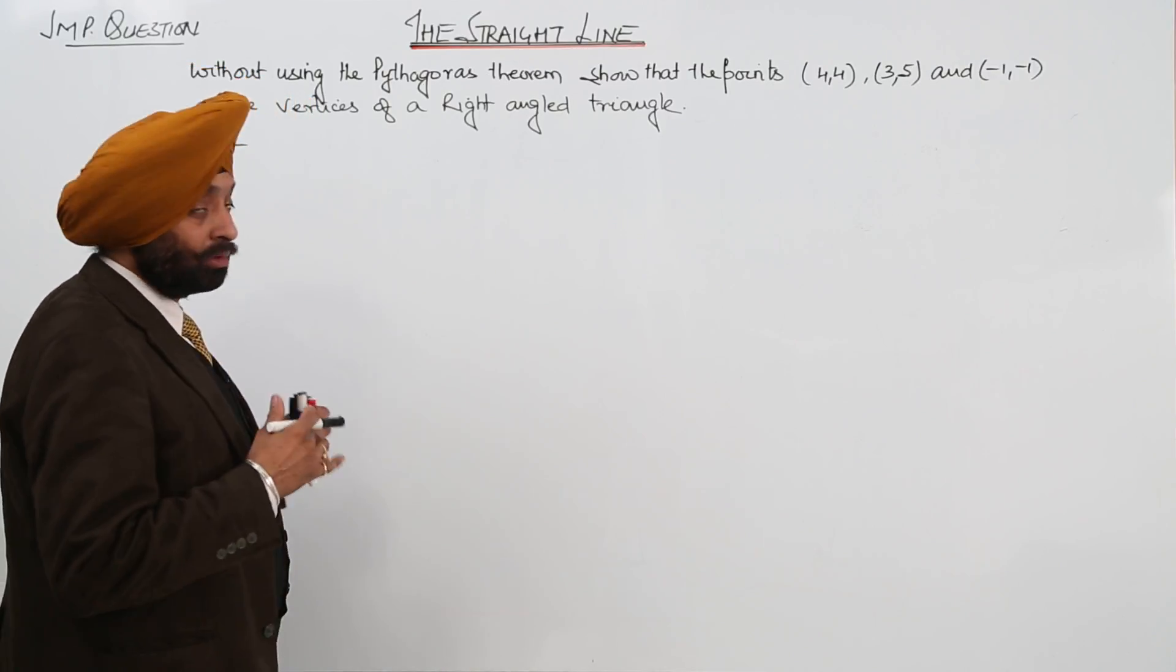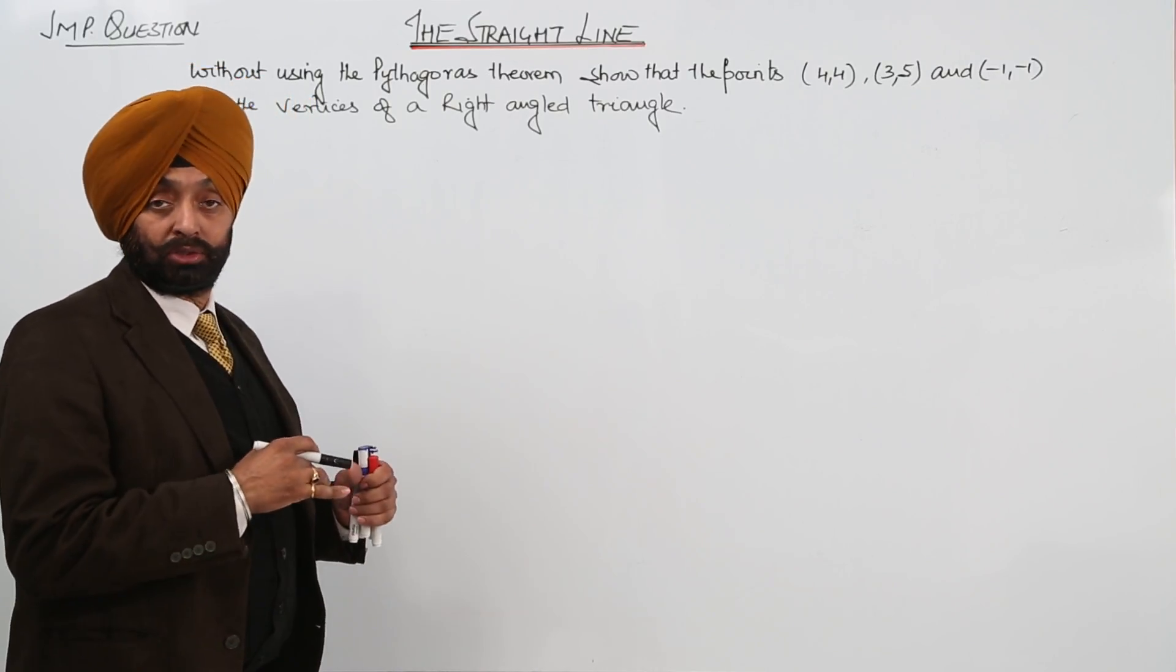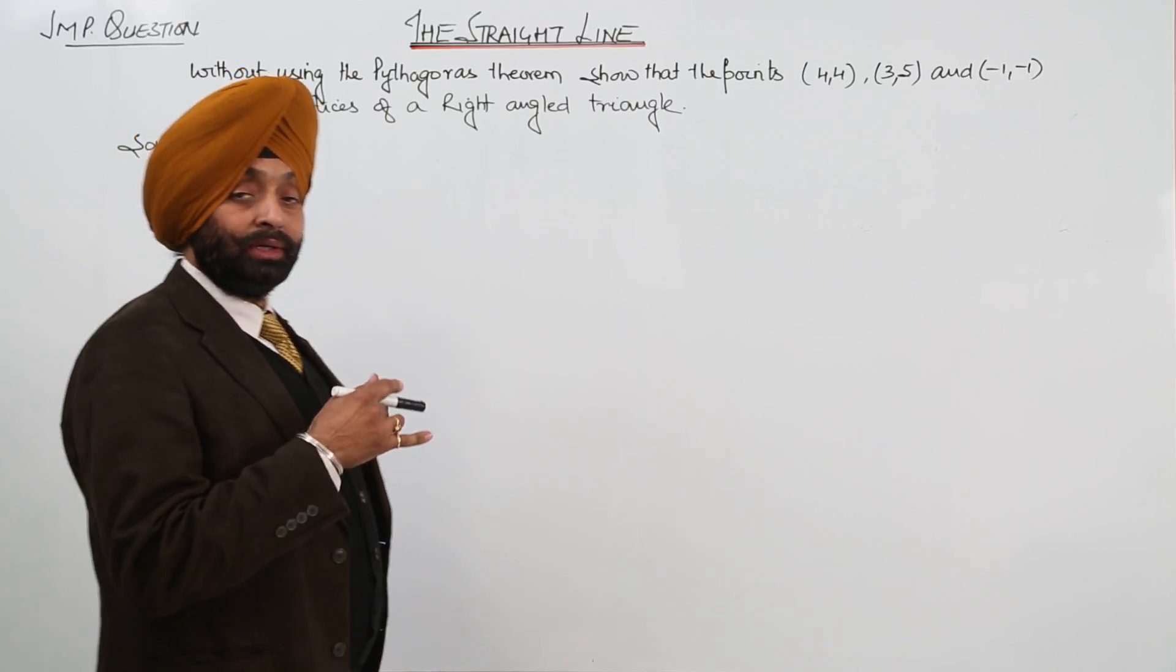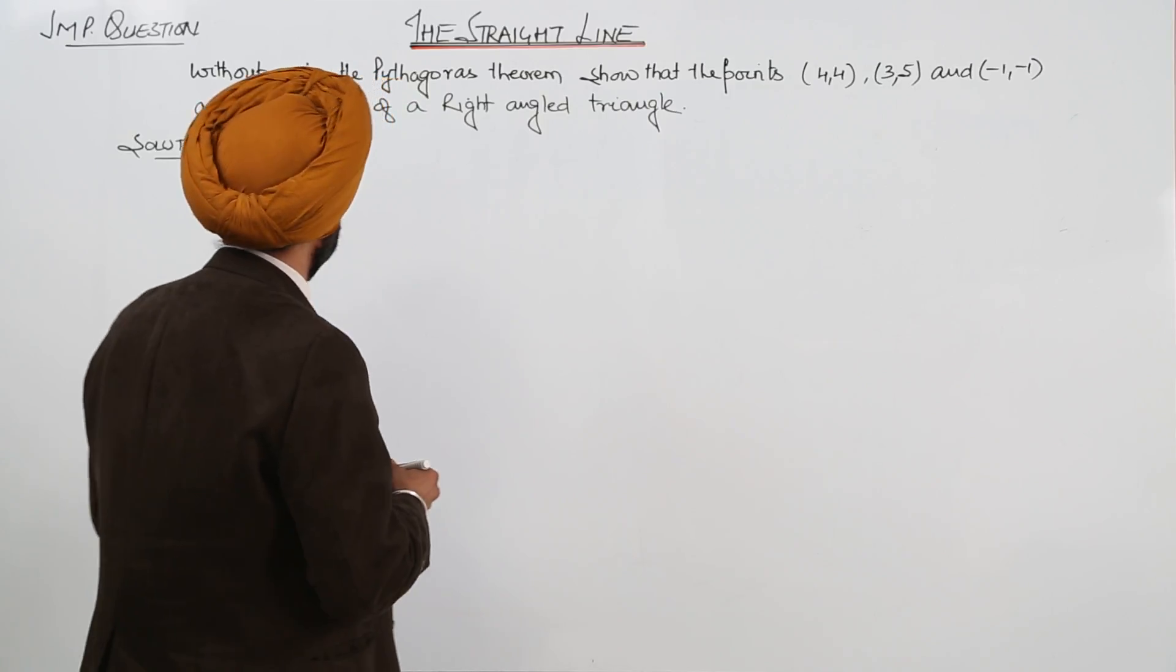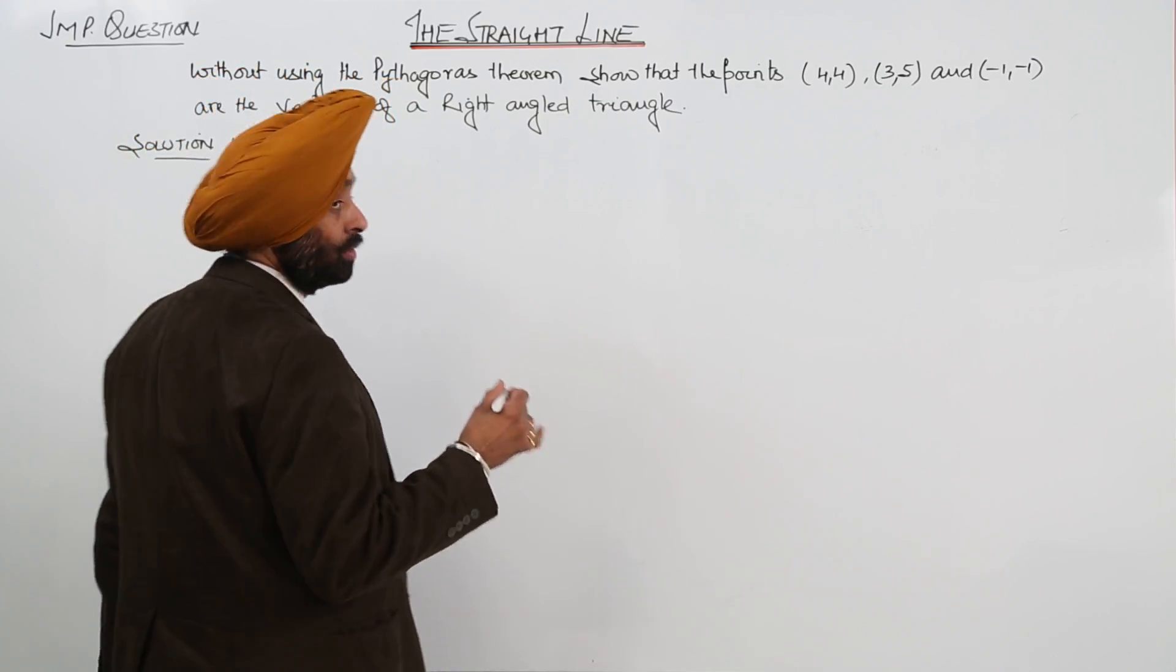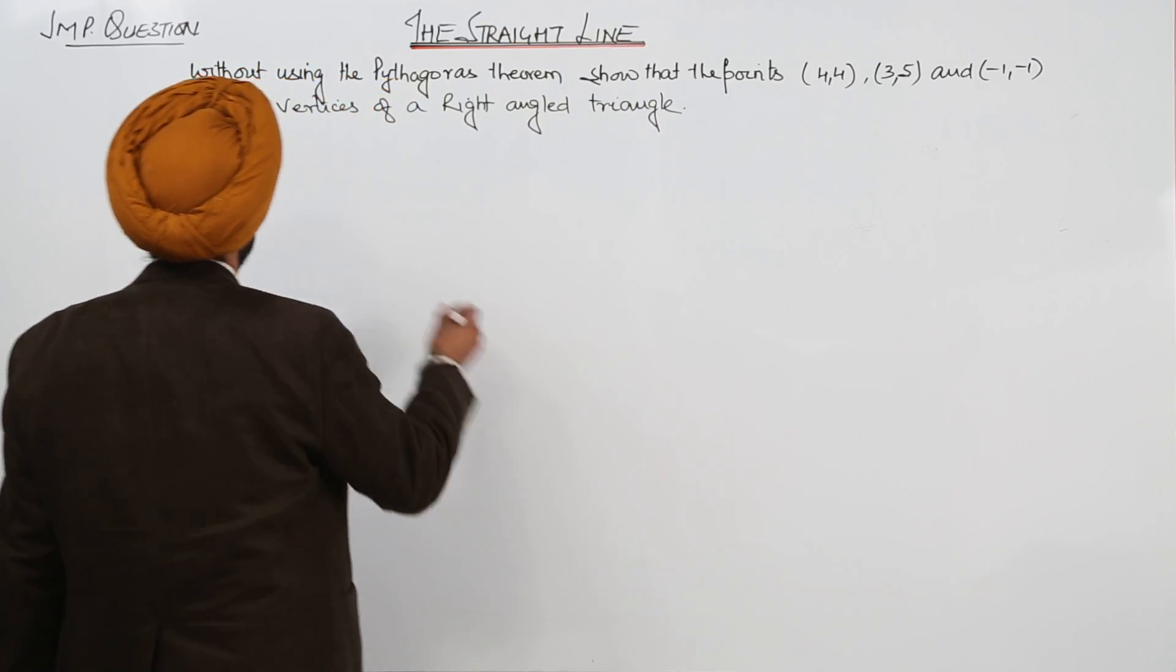Now, in this question, we are not supposed to use the Pythagoras theorem to show that the vertices given are of a right angle triangle. So what are we going to do? We are going with the slope method.